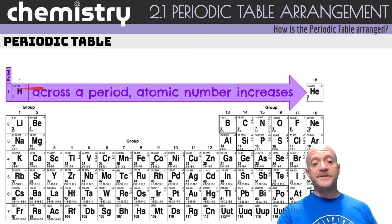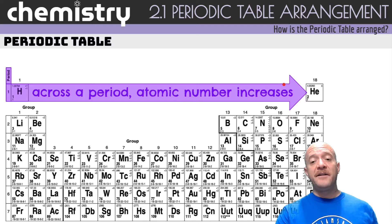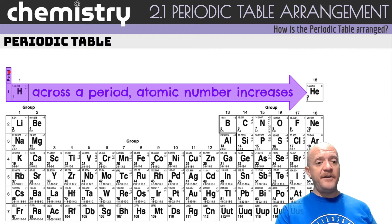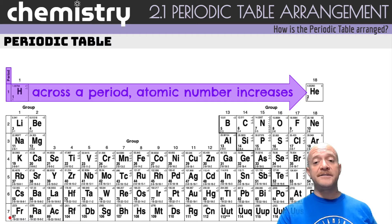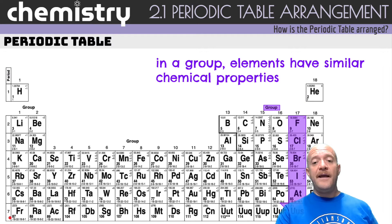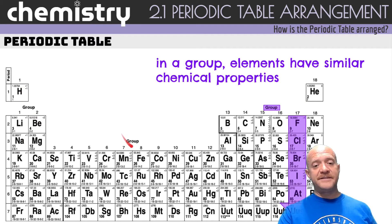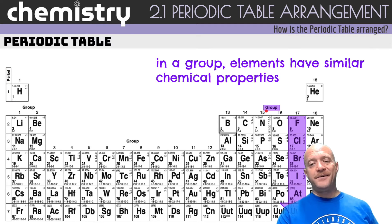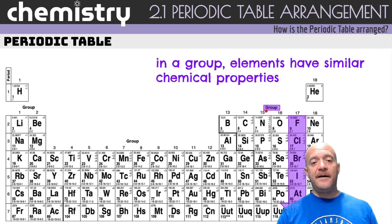In the modern periodic table, elements are arranged across periods and up and down in groups. Across a period, the atomic number increases. There are seven periods going across and 18 groups going up and down. Note that 'group' is labeled at the top and 'period' is on the side — this is something they like to ask you a lot.